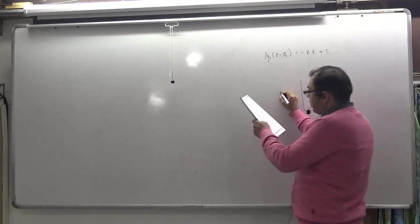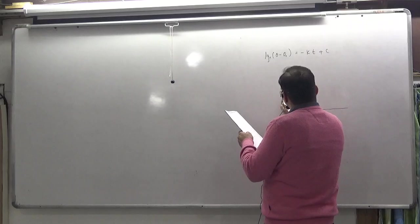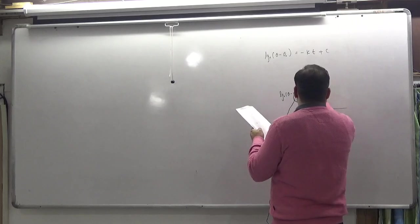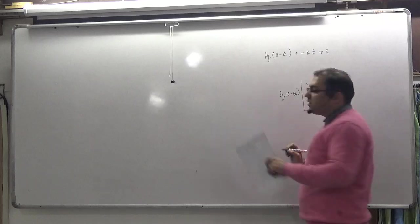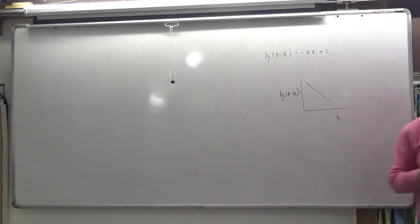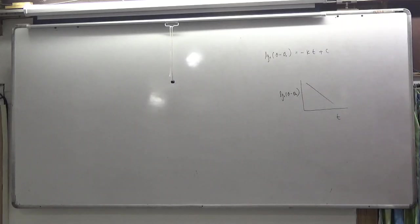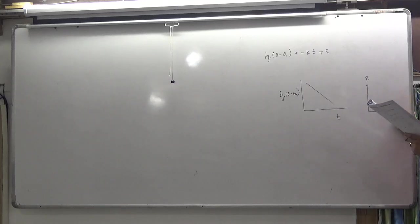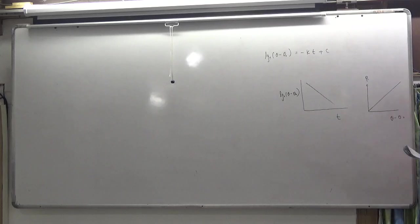When you plot the graph of log(theta minus theta-not) versus time, you get a straight line with negative slope. This point was discussed. Also noted: the rate of cooling is directly proportional to temperature difference. Check page number 30 for these graphs.